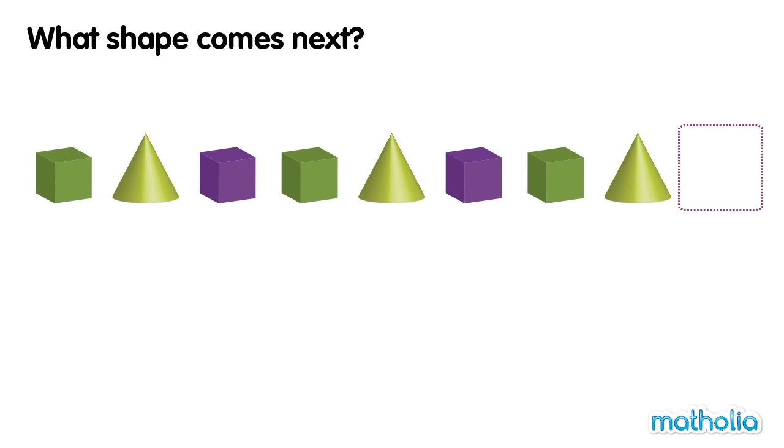What shape comes next? This pattern shows a change in shape and colour. The repeating part of the pattern is green cube, green cone, purple cube. The next shape after green cone is purple cube.